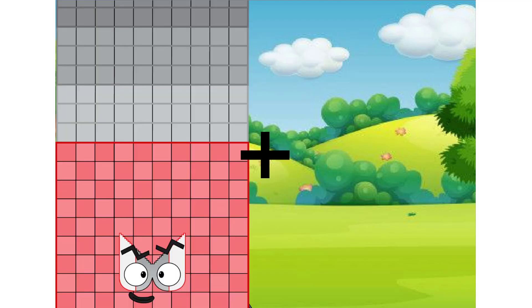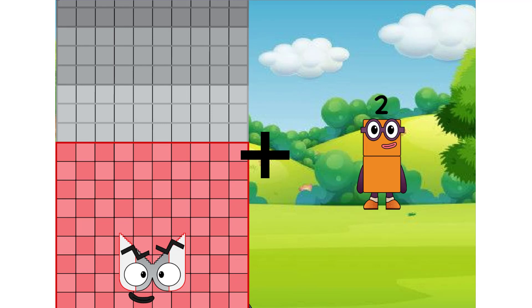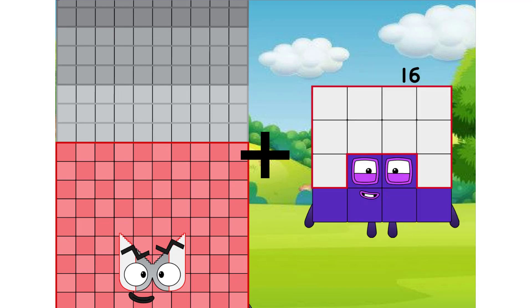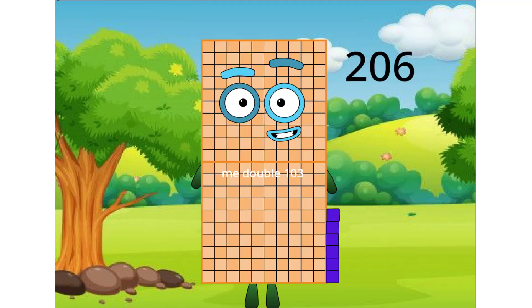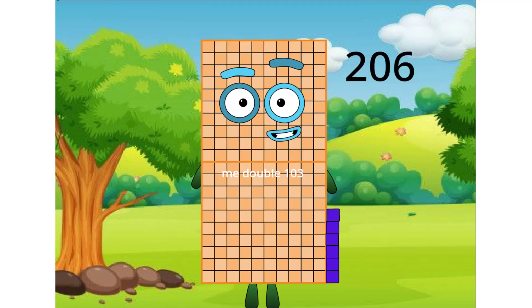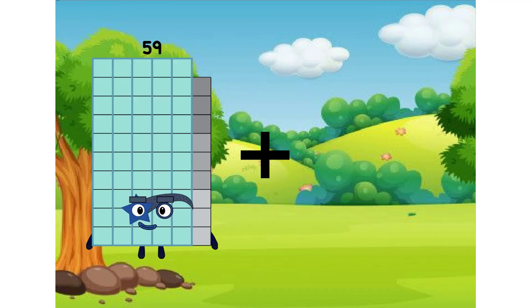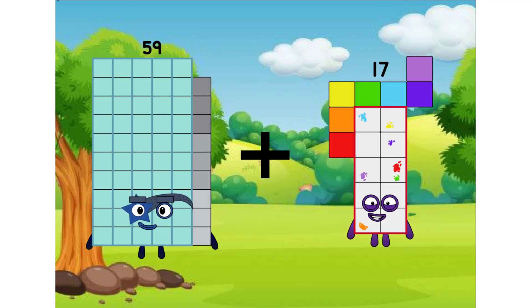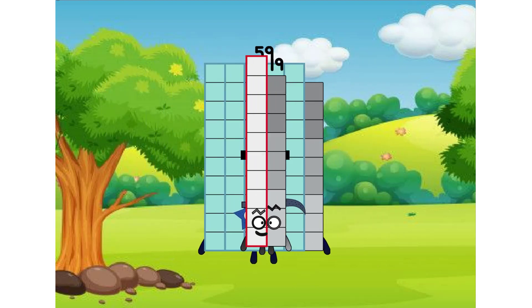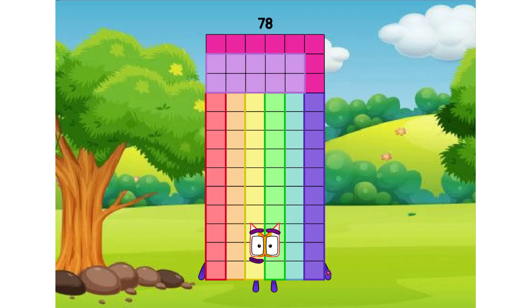190 plus 16 equals 206. 59 plus 19 equals 78.